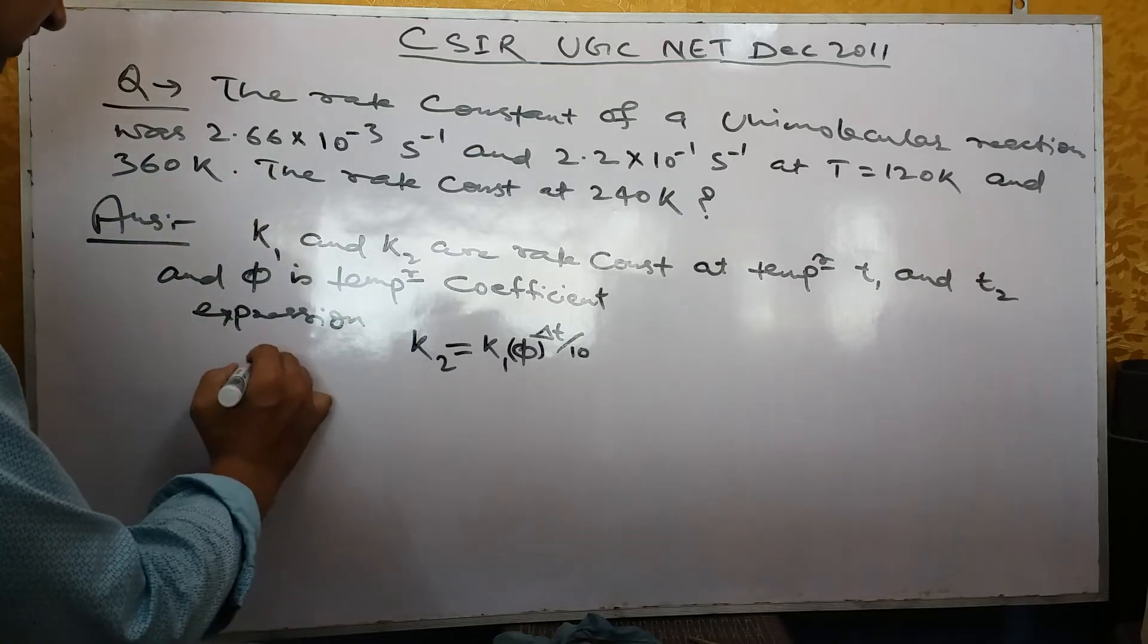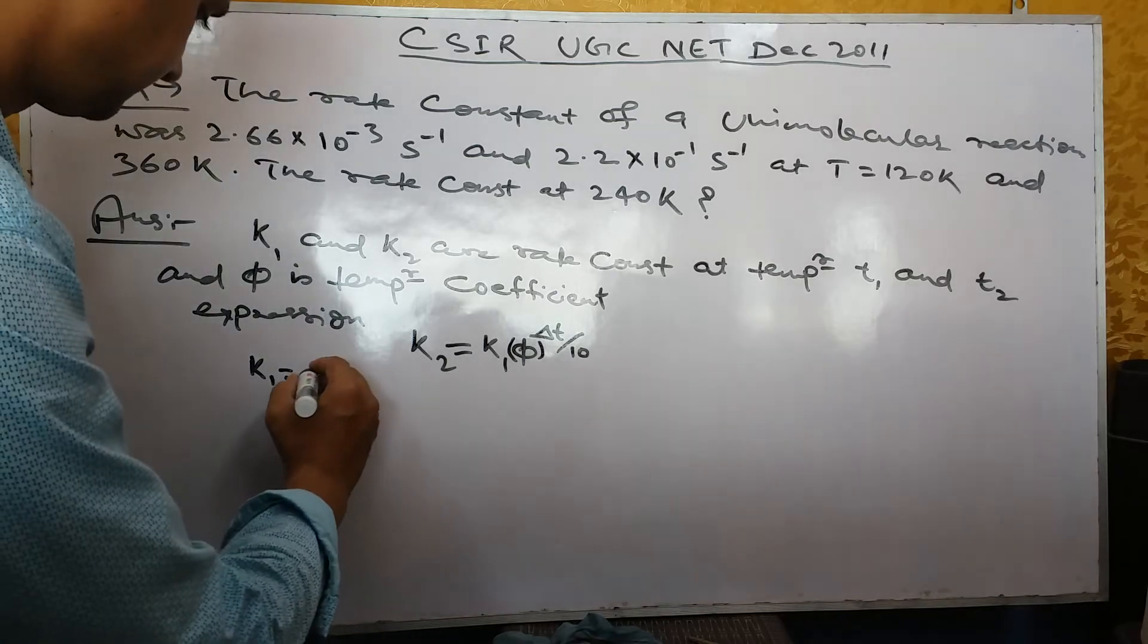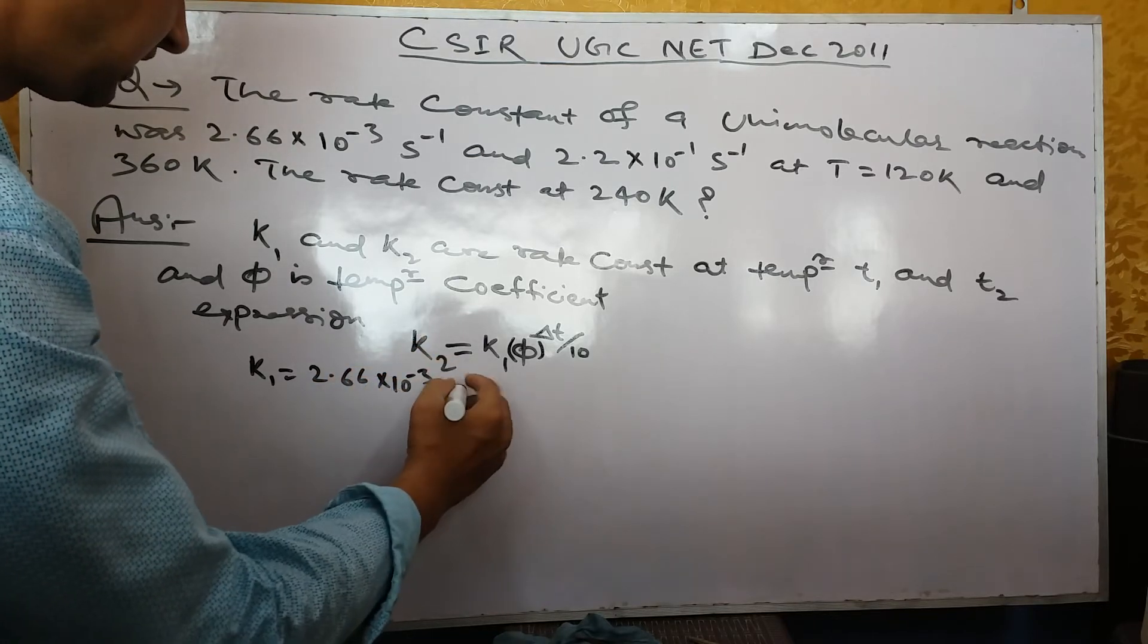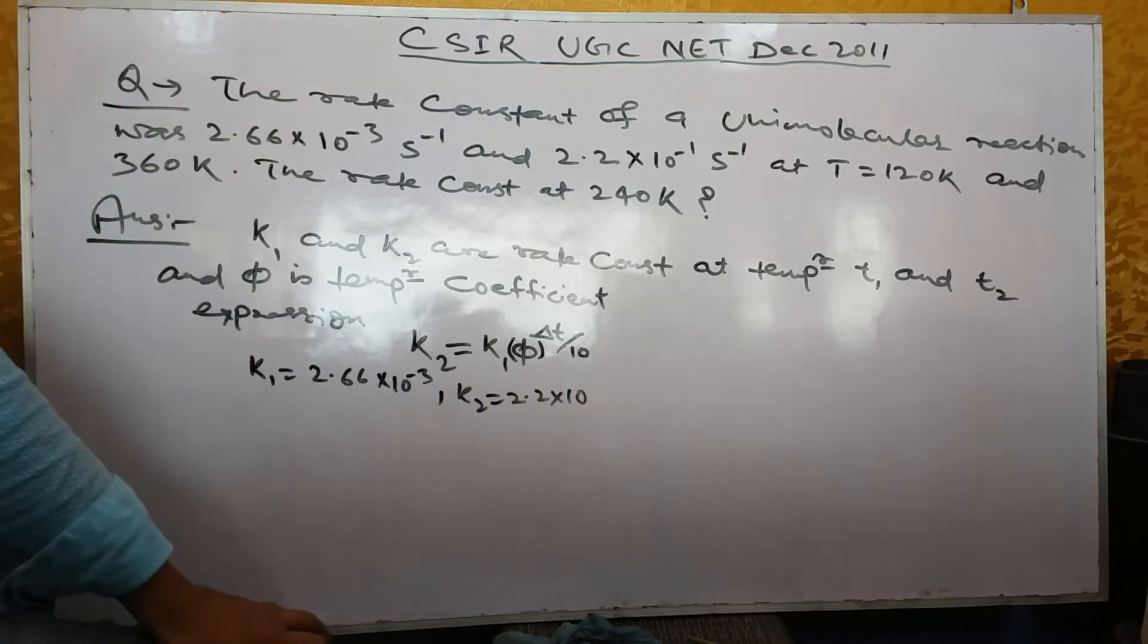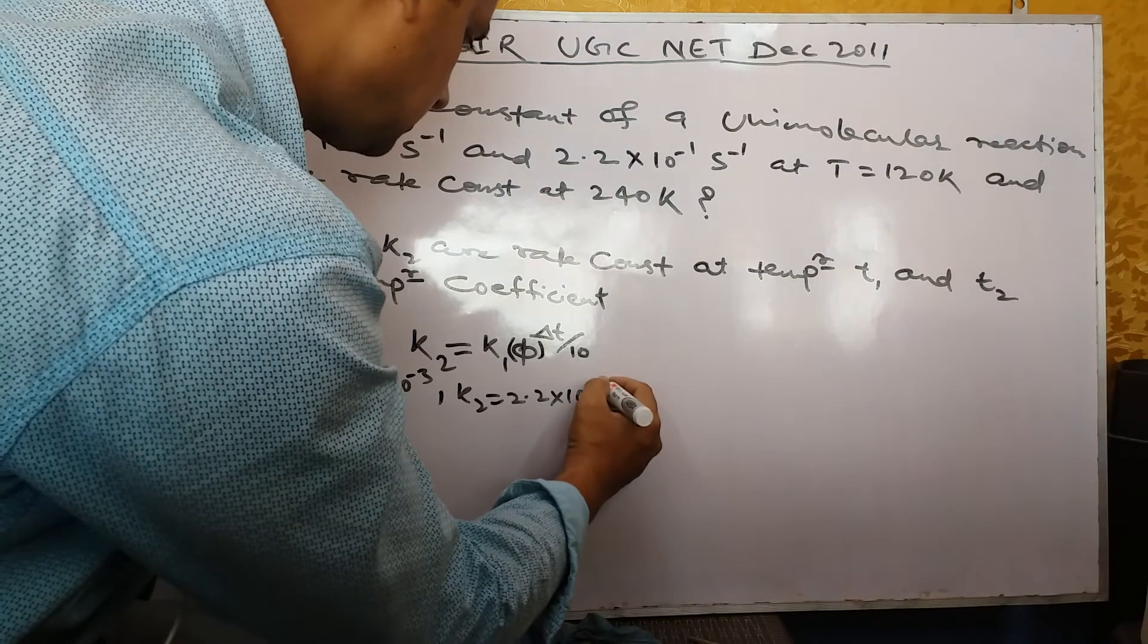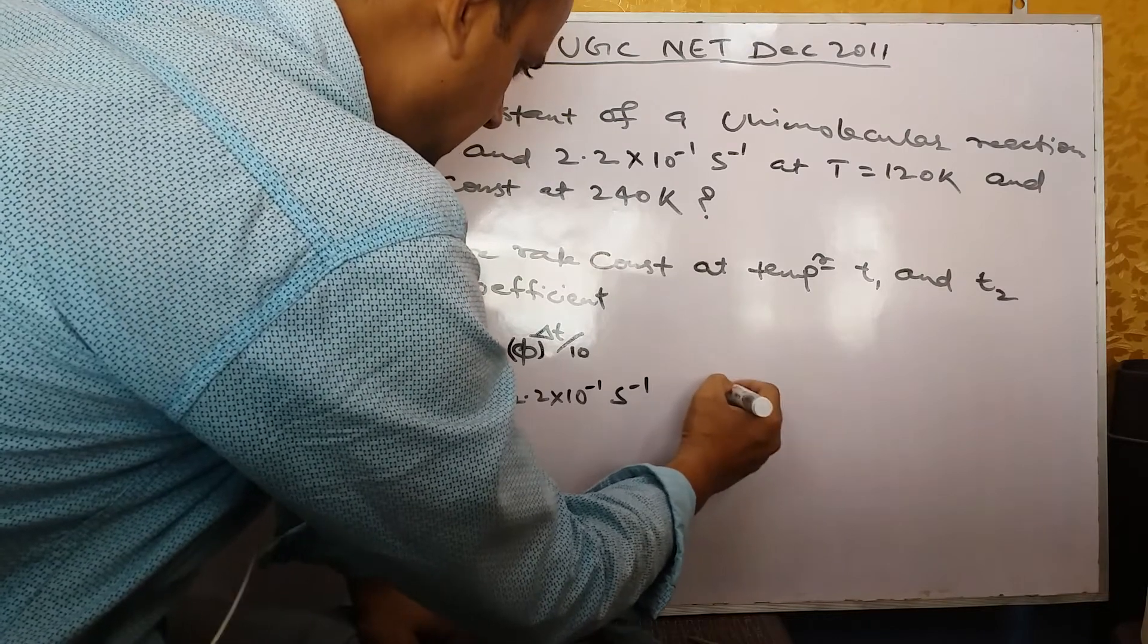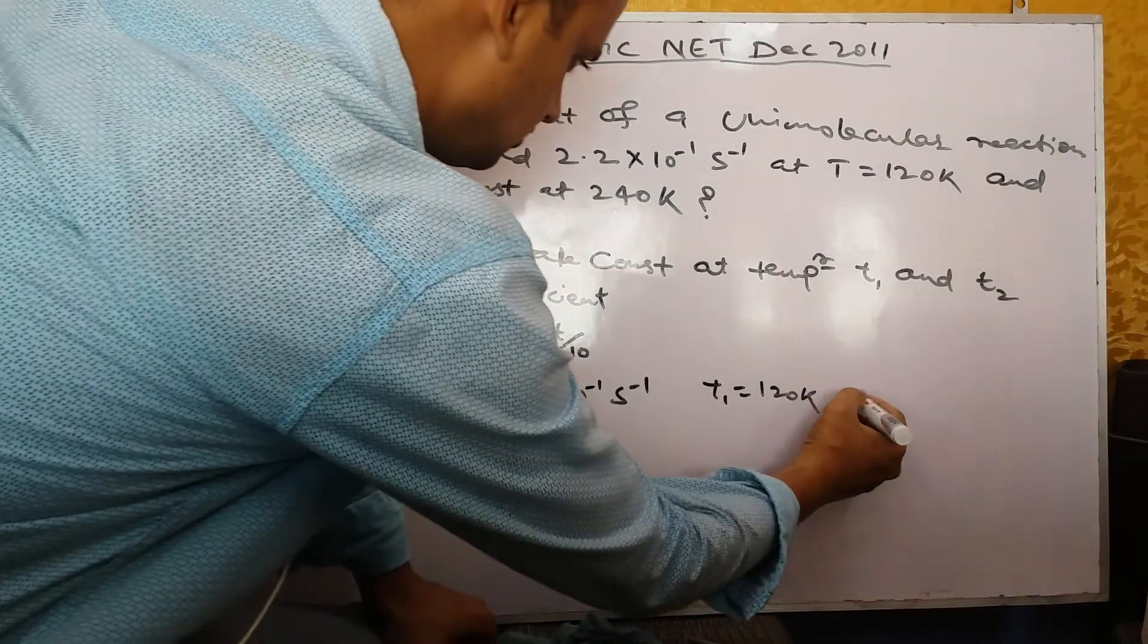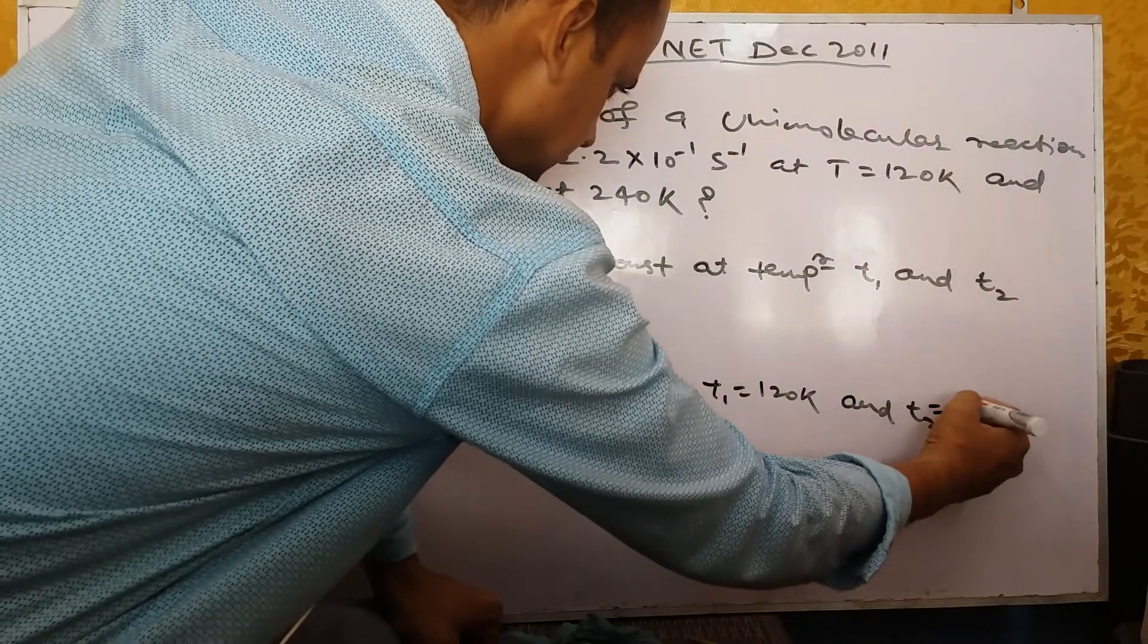Write down K1 value: 2.66 × 10^-3 and K2: 2.2 × 10^-1 per second. T1 and T2 are also given: T1 is 120 Kelvin and T2 is 360 Kelvin. These values are given.